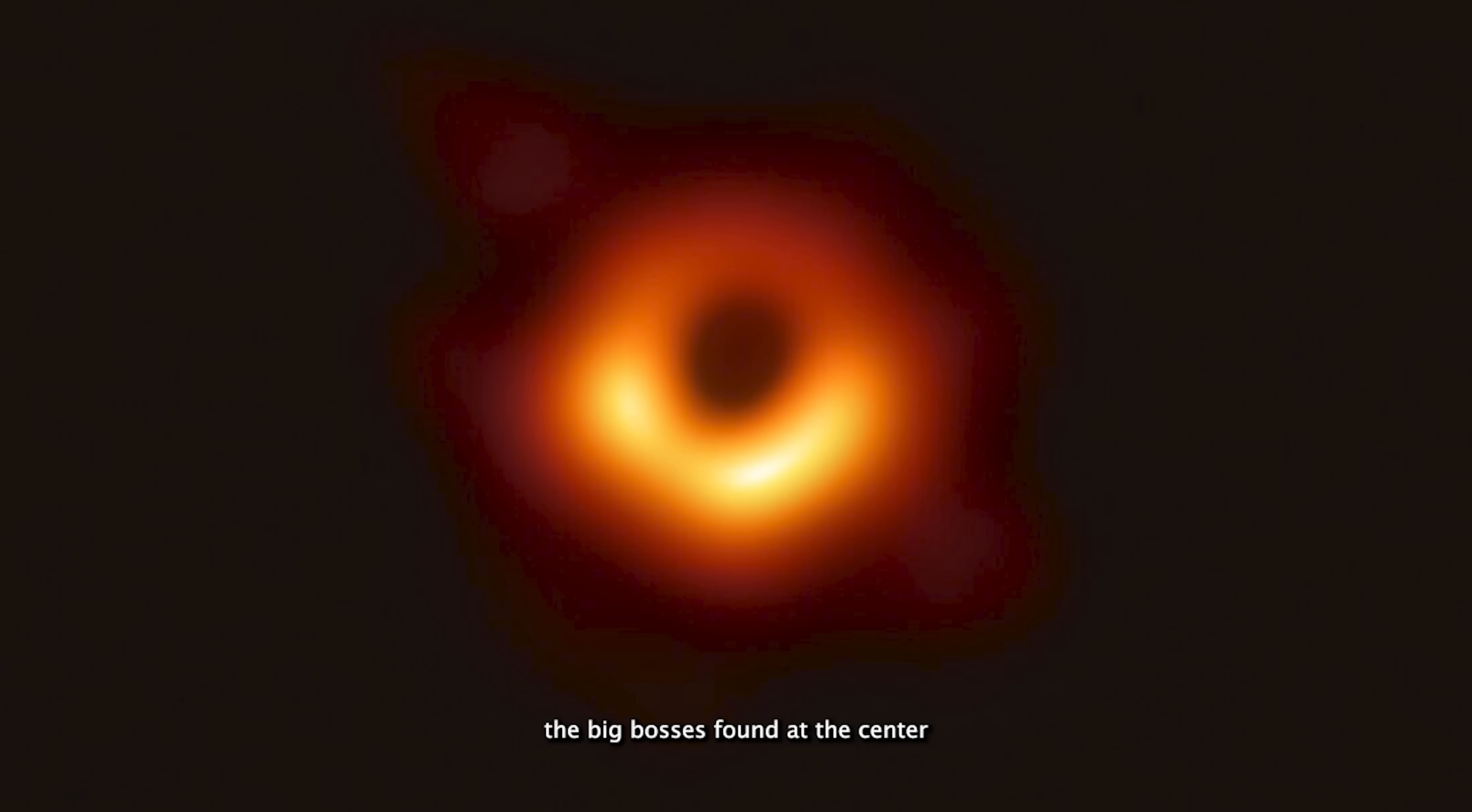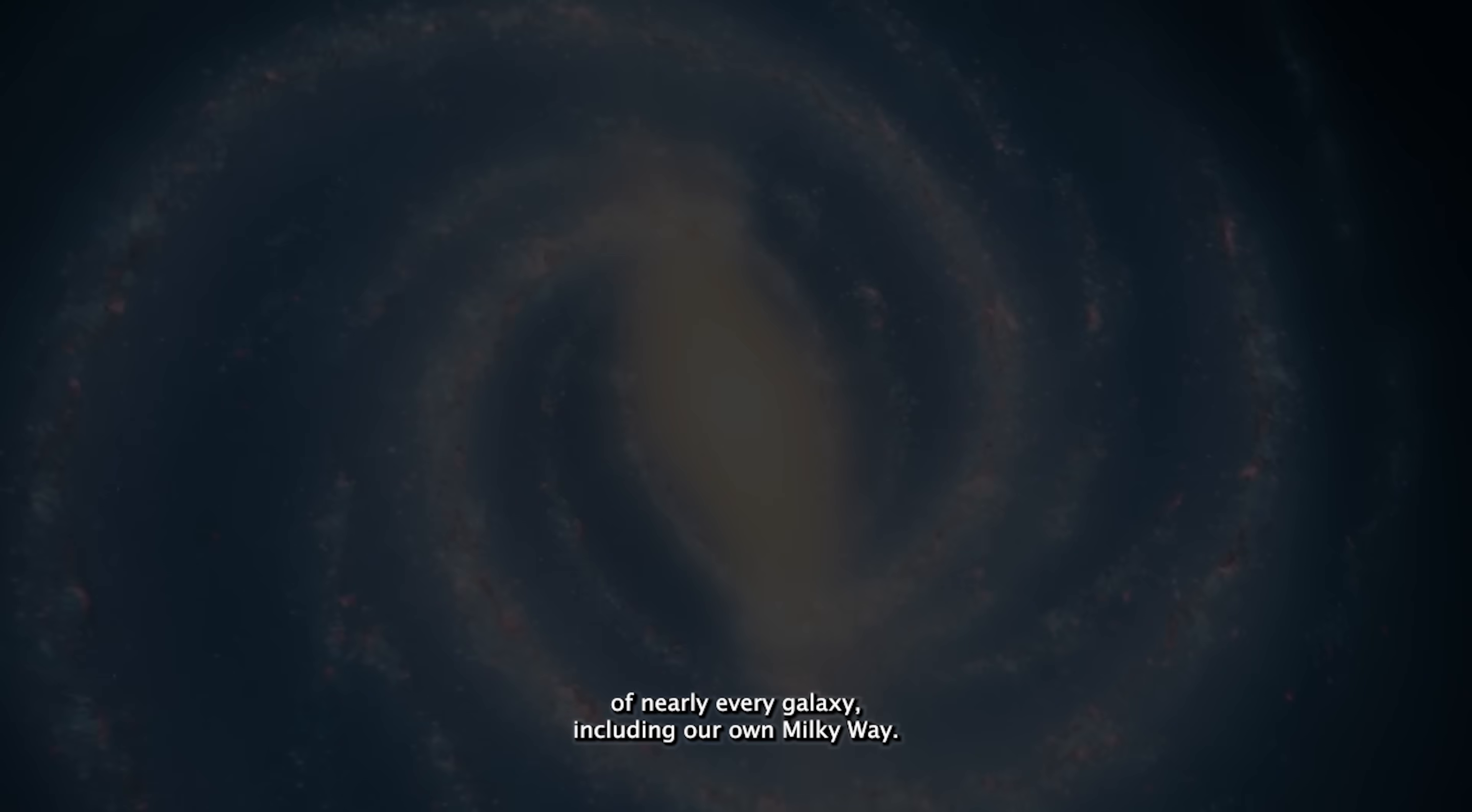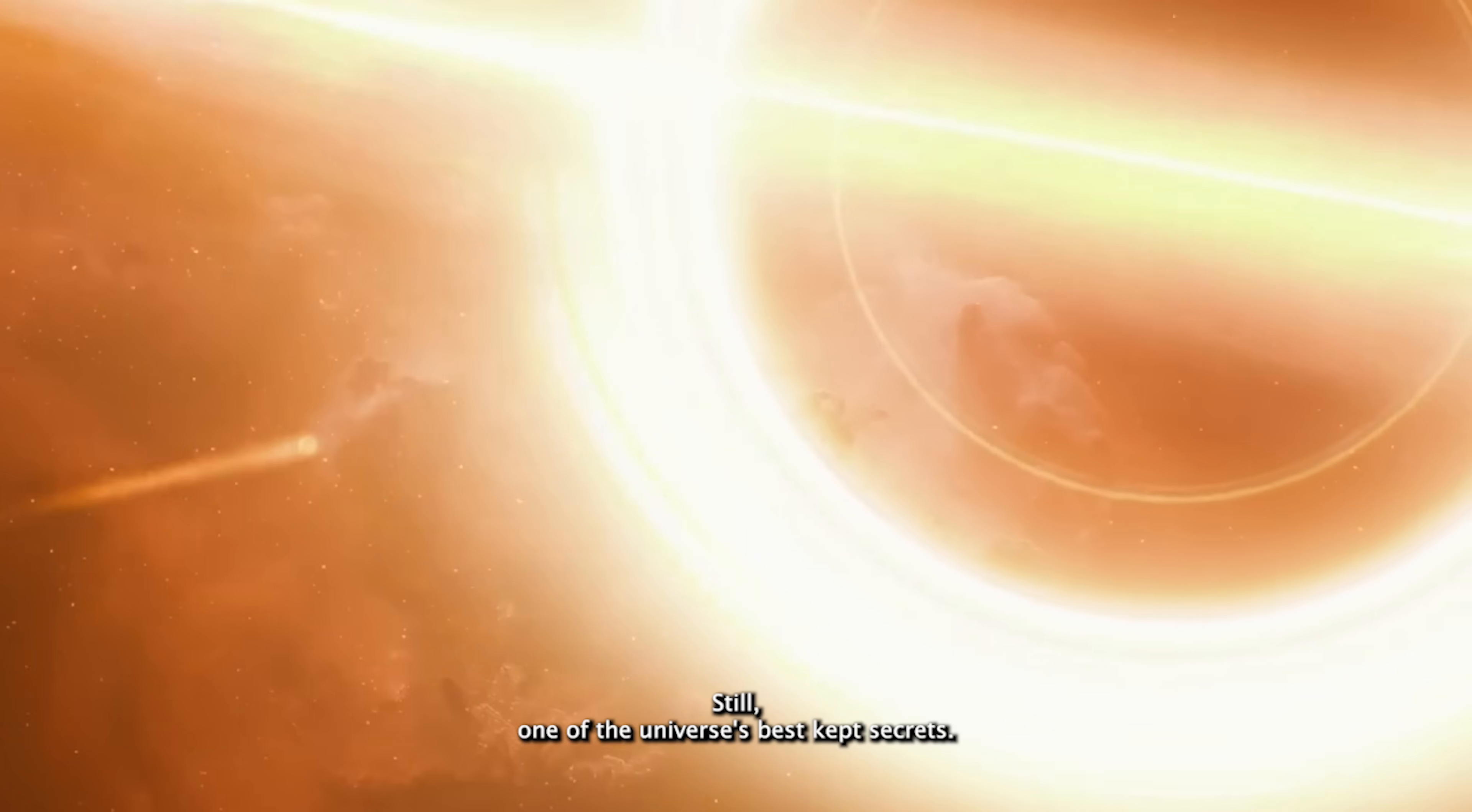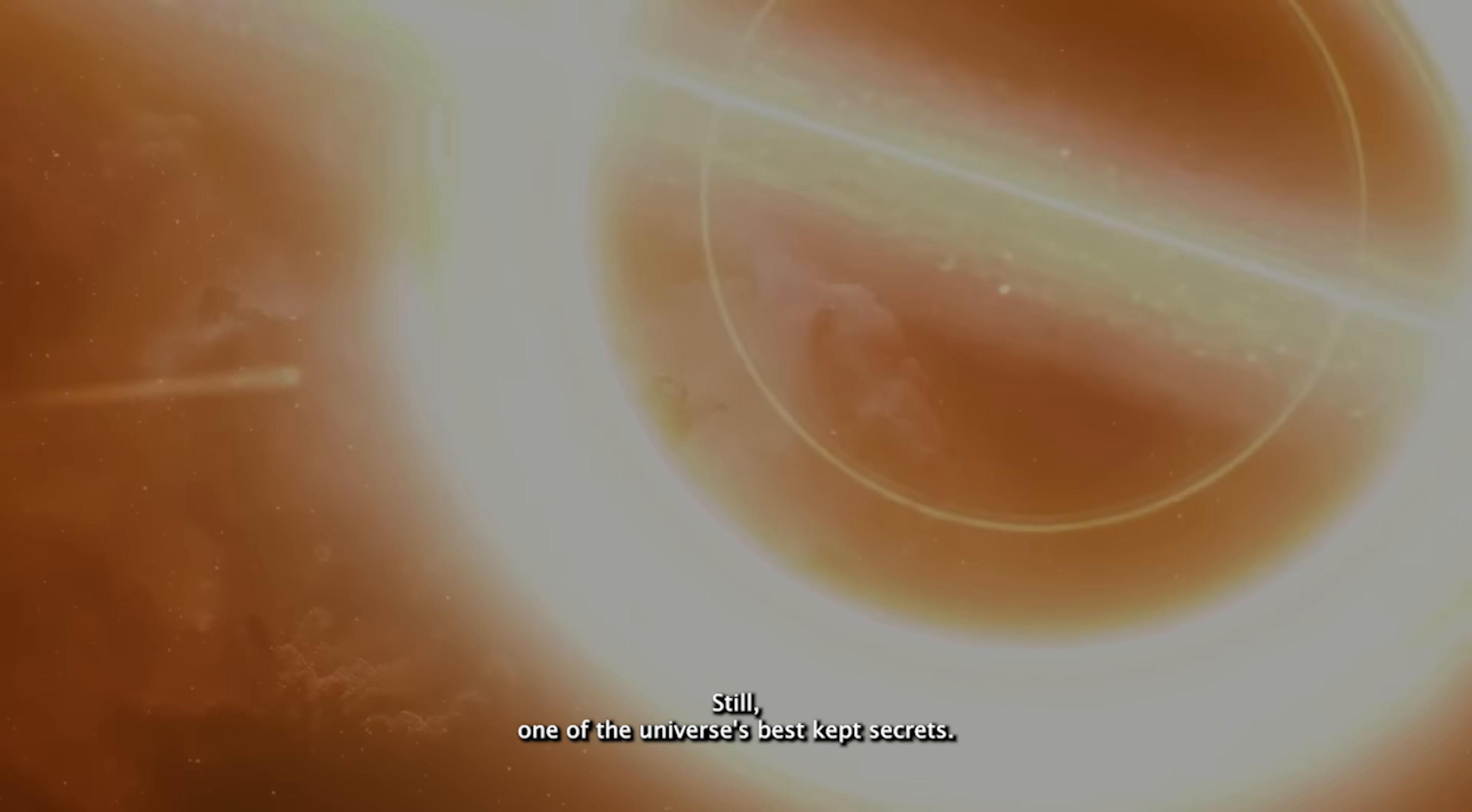Two, supermassive black holes. The big bosses. Found at the center of nearly every galaxy, including our own Milky Way, they weigh in at millions, sometimes billions, of solar masses. How they got so huge so fast? Still one of the universe's best-kept secrets.